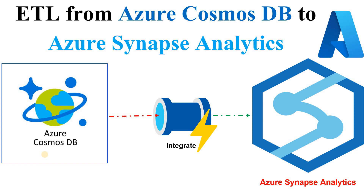On the destination side, we also need to create another linked service which will authenticate a dedicated SQL pool that we create on Azure Synapse Analytics. So in total, we have a source — Azure Cosmos DB — and a destination — Azure Synapse Analytics. We'll use the Integrate capability to migrate the data and then see how we can get insights from it.